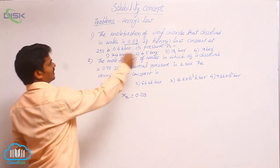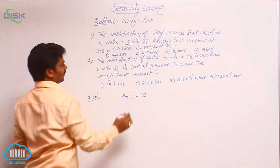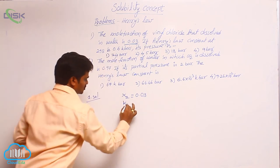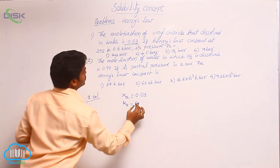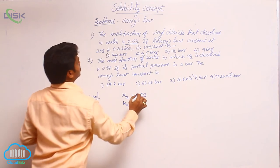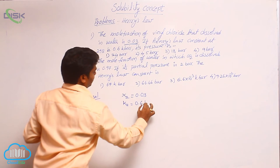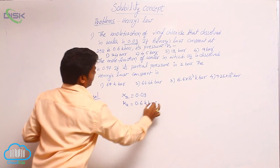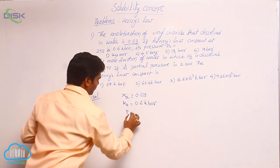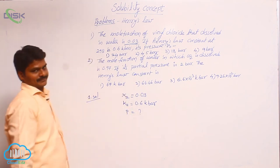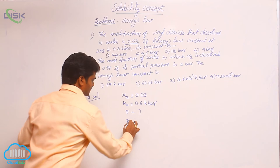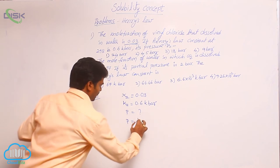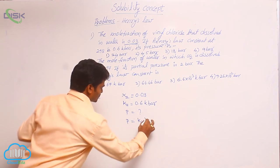If Henry's law constant at 298 Kelvin is 0.6 kilo bar, that means KH, Henry's law constant, its value is given as 0.6 kilo bar. Now, pressure of the gas is the question. So use the direct formula: P is equal to KH into mole fraction of solute.